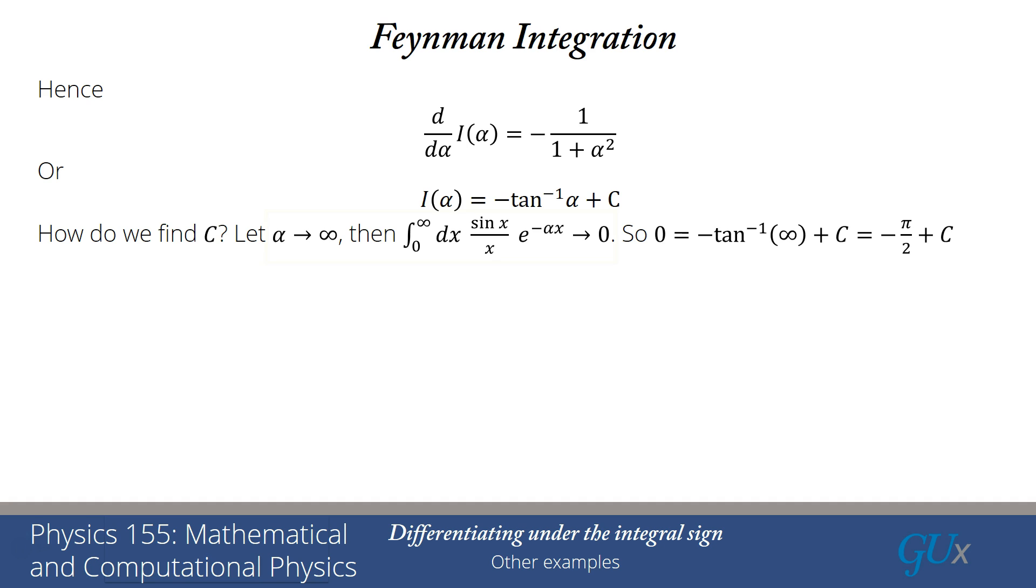So one trick is to try to evaluate the integral in some limit where we can determine what it is. If I take the limit alpha goes to infinity, that e to the minus alpha x is going to go to 0. In fact, the whole integral is going to go to 0. So I learned that 0 is equal to tan inverse of infinity plus C. Tan inverse of infinity is just pi over 2. So I get minus pi over 2 plus C. The whole thing has to equal 0. That tells me C is equal to pi over 2.